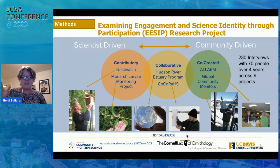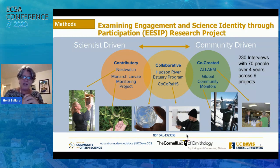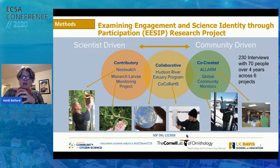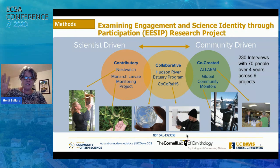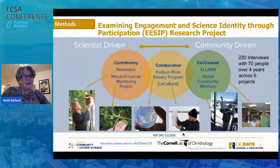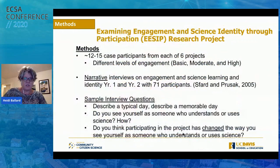We had six large citizen science or community science programs across the country. Some may be familiar: the Monarch Larva Monitoring Project and Nest Watch from the Cornell Lab are the more contributory projects. We had more collaborative projects where people were involved in some parts of the process besides data collection. CoCoRaHS — the rain, hail and snow monitoring network — was one of them. And then co-created projects: ALARM, a water quality monitoring organization, and Global Community Monitor, which is air quality focused. Both were quite concerned with environmental justice.